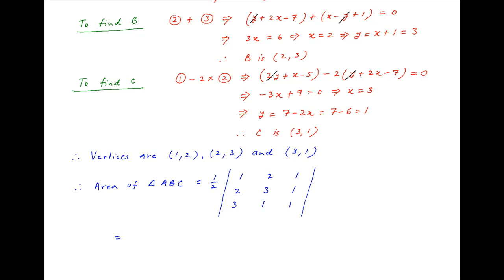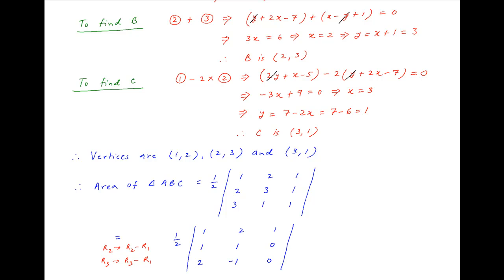Applying a couple of row operations — replacing row 2 with the difference of row 2 and row 1, and replacing row 3 with the difference of row 3 and row 1 — the area is equal to half of the determinant where the first row is (1, 2, 1), the second row is (1, 1, 0), and the third row is (2, -1, 0).